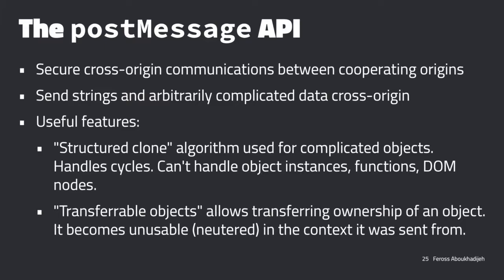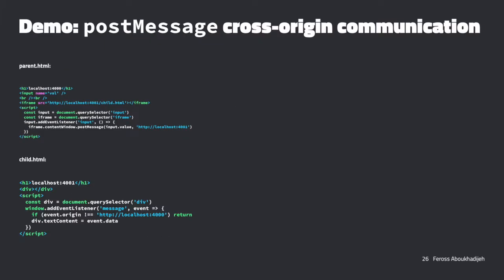If you remember, last time where we left off, we had this cross-origin communication using the postMessage API. This was that nicer API that allows two sites that want to cooperate with each other to send messages to each other. One requirement was that one site had to have a reference to another site. One way to do this is to create an iframe and load the site you want to talk to in that iframe. Then you have a reference to that frame and you can use the postMessage API to send it a message. The receiving site can listen for those messages using the addEventListener API.